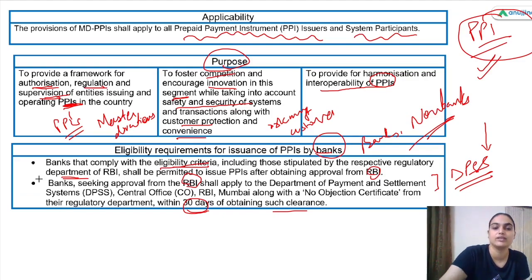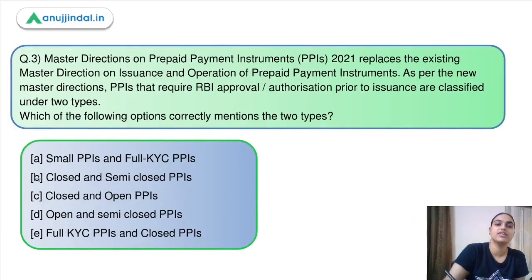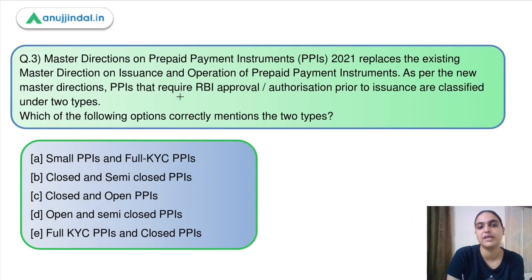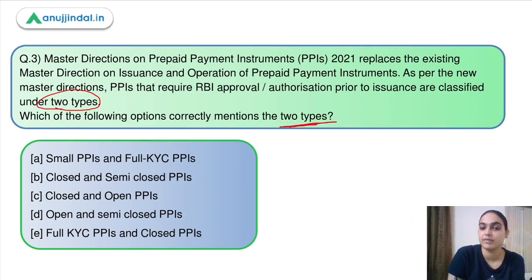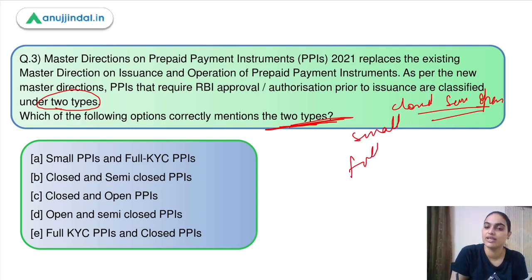Moving to question three, which says: Master Directions on PPI 2021 replaces the existing master directions on issuance and operation of prepaid payment instruments. As per the new master directions, PPIs require RBI approval and are classified into two types. Which of the following correctly mentions those two types? Previously they were closed, semi-closed, and open PPIs. According to the new master directions, the classification is small PPIs and full KYC PPIs. The answer is option A.